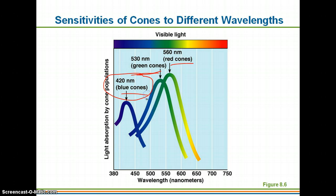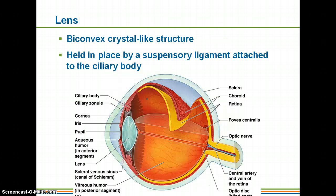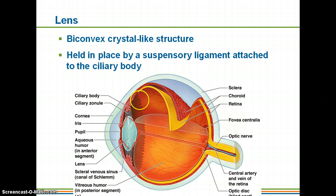The lens is a biconvex, crystal-like structure — biconvex means it protrudes outward on both sides. It is held in place by a suspensory ligament attached to the ciliary bodies.